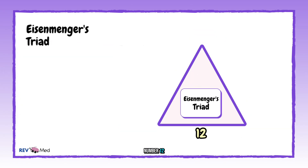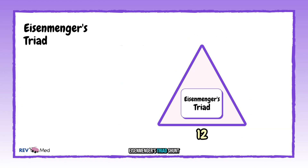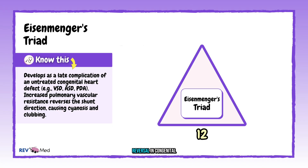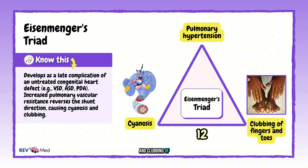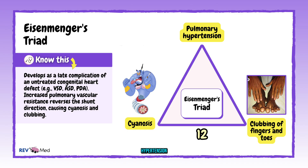Number twelve: Eisenmenger's triad — shunt reversal in congenital heart disease. Cyanosis, pulmonary hypertension, and clubbing of fingers and toes. It happens when a left-to-right shunt reverses to right-to-left due to pulmonary hypertension.